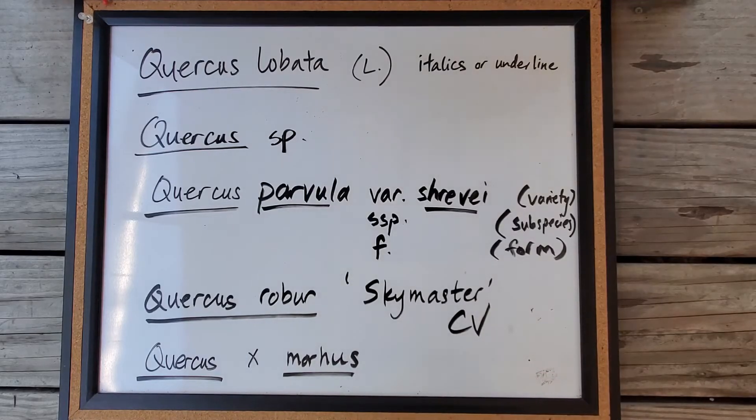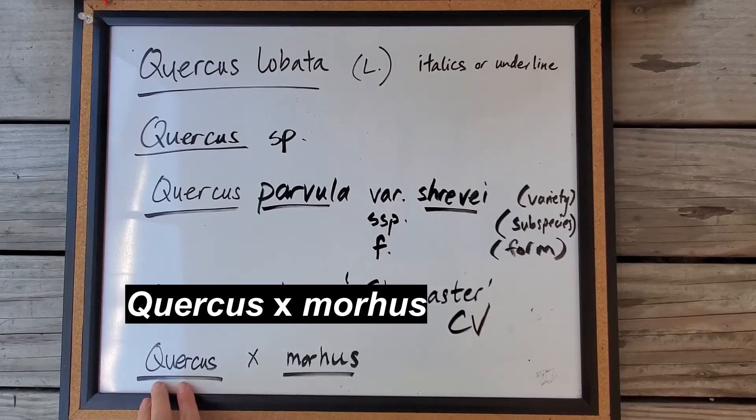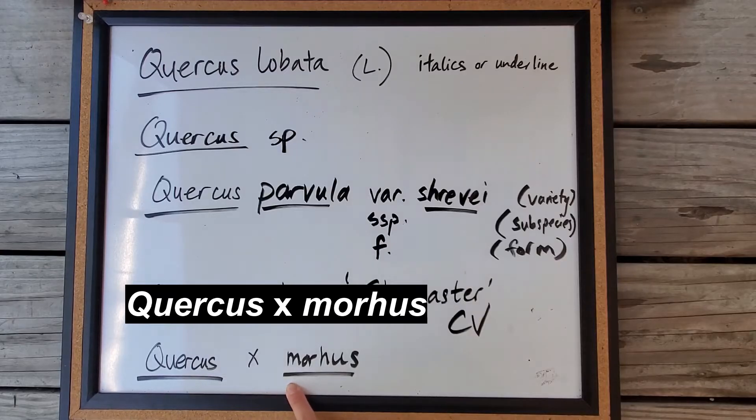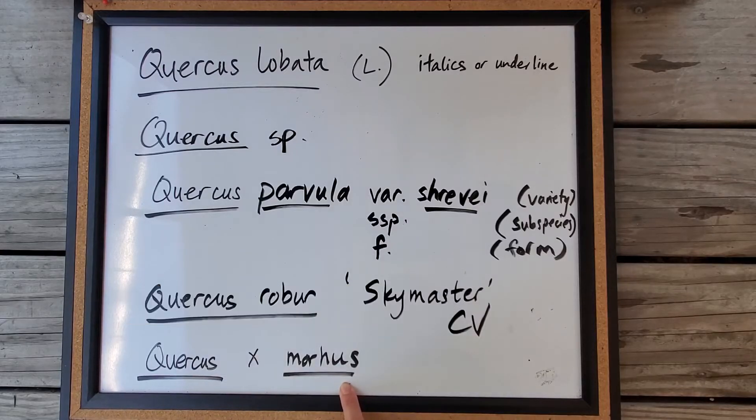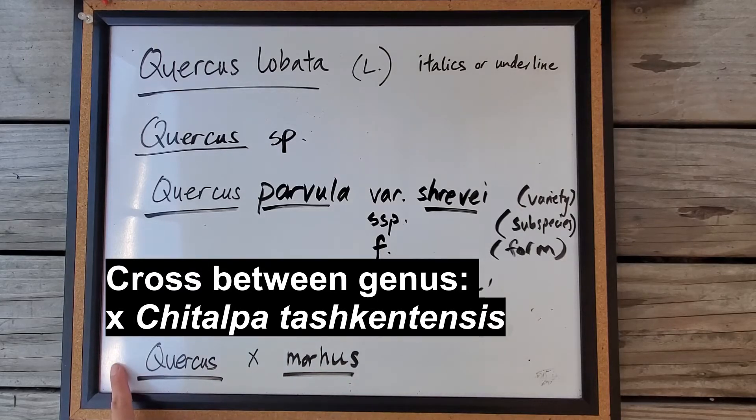And lastly, if you have a hybrid, you'll have the genus, an x, not italicized or underlined, and the specific epithet. There are some crosses that happen between genera, so sometimes you'll see an x in the front.